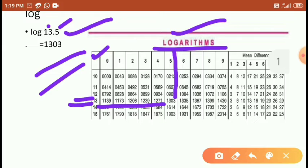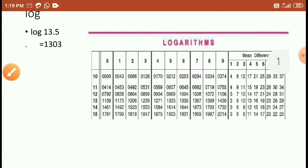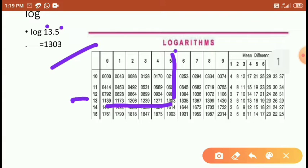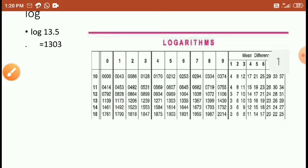Whatever the number is, we find the respective column and the respective row to find the log. Here we are finding the log at the 13th row and the 5th column. The 13th row and 5th column correspond to the value 1303, so the answer is 1303.